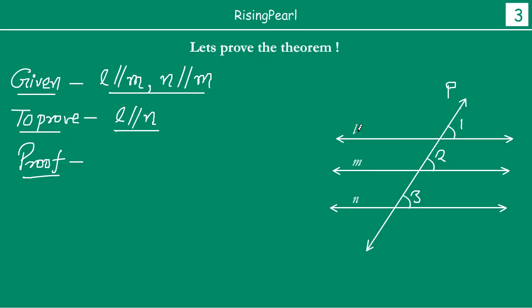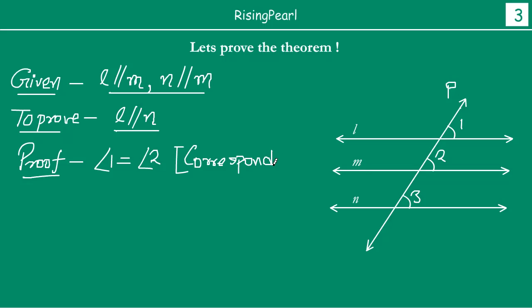If you take lines L and M — when a transversal cuts parallel lines, we know that angle 1 will be equal to angle 2. Because L and M are parallel lines and you have a transversal that cuts them, these are corresponding angles. So, the corresponding angles are equal.